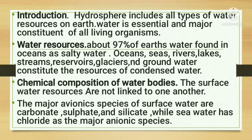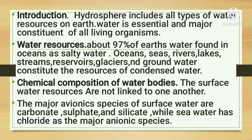The water that humans use is primarily freshwater, which includes surface water and groundwater. Next is the chemical composition of water bodies. Surface water resources such as ponds, lakes, streams, and rivers are not linked to one another — they retain their separate chemical entities, though not differing vastly.